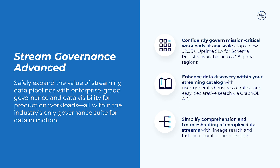Quality controls can be enforced across each and every unique pipeline and workload with an increased schema limit of 20,000 per environment. And with 28 global regions supported, teams have more flexibility to run schema registry directly alongside their Kafka clusters and maintain strict compliance requirements.